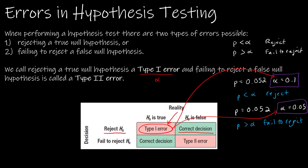When we talk about errors, we have a type one error of alpha, and then there's also a type two error — that calculation is a little bit convoluted and we don't need to worry about it here. We just need to understand that if I reject the null and I'm supposed to reject the null, that's correct. But if I fail to reject it when I wasn't supposed to, that's a type one error. If I fail to reject the null and that's correct, but if I fail to reject the null when I wasn't supposed to, that's a type two error.